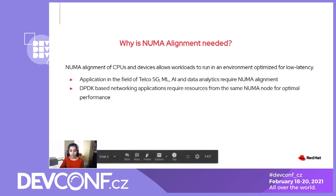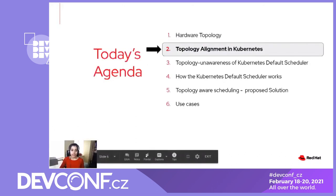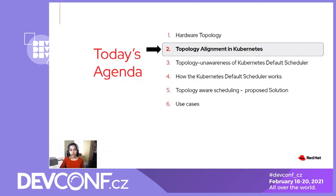Now let's move towards why NUMA alignment is important. For performance-sensitive applications in the field of Telco 5G, machine learning, AI, and data analytics, CPUs and devices should be allocated such that they have access to the same local memory. Another example is DPDK-based networking applications which require resources from the same NUMA node for optimum performance. The next question is what NUMA alignment means in the Kubernetes context and how do we achieve NUMA alignment in Kubernetes?